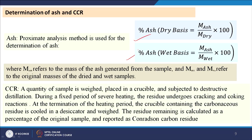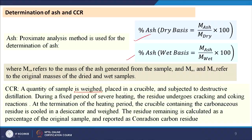For Conradson carbon residue: a certain amount of material is placed in a crucible and subjected to destructive distillation during a fixed period by severe heating. The remaining residue is collected and expressed as a percentage of the original sample.